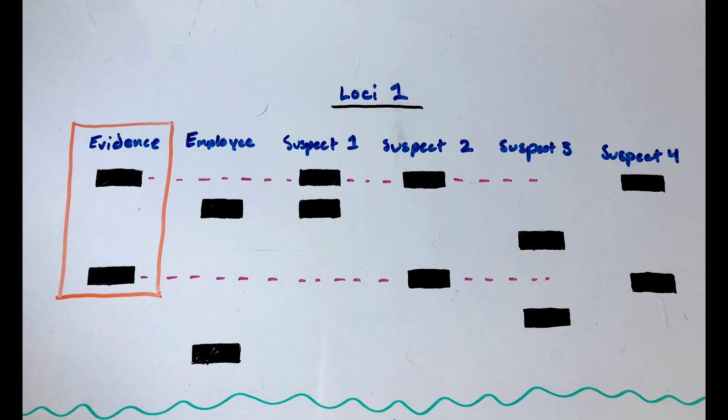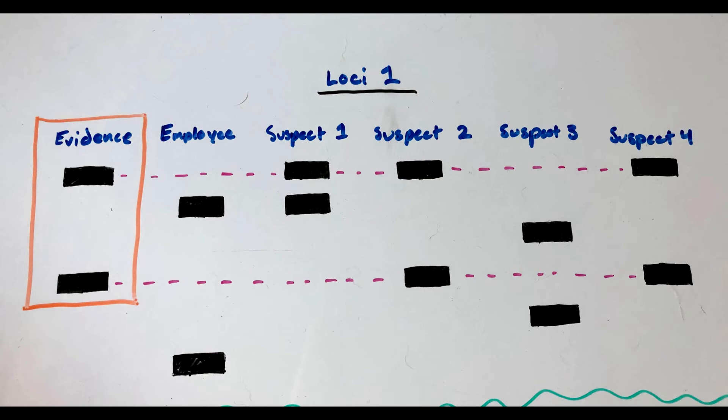Suspect 3 did not leave the evidence because the bars are not in the same positions. Suspect 4 may match the DNA evidence because the bars do match exactly.